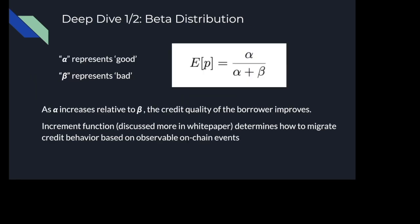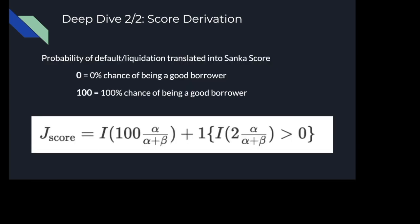A quick deep dive on the beta distribution: alpha represents a good credit metric and beta represents a bad credit metric. As alpha increases relative to beta, the credit quality of the borrower improves. We've created a whole set of increment functions, discussed more in the white paper, to determine how to migrate and score credit behavior over time based on different on-chain events from different protocols. Once you have this alpha and beta distribution, you can compute a score — simply a probability of default or liquidation — and translate it into a Sanka score, with zero being a 0% chance of being a good borrower and 100 being a 100% chance of being a good borrower and repaying.